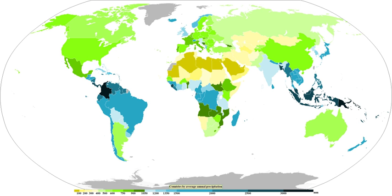Like other precipitation, hail forms in storm clouds when supercooled water droplets freeze on contact with condensation nuclei, such as dust or dirt. The storm's updraft blows the hailstones to the upper part of the cloud. The updraft dissipates and the hailstones fall down, back into the updraft, and are lifted again. Hail has a diameter of 5 mm or more.